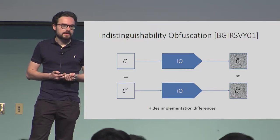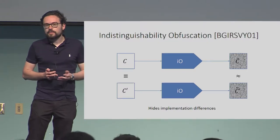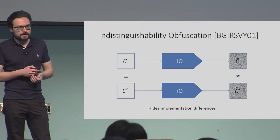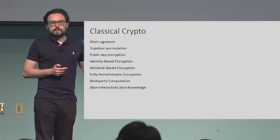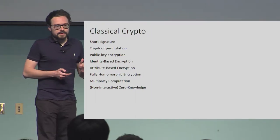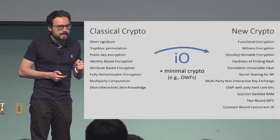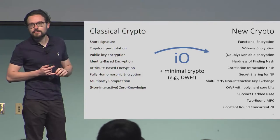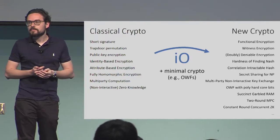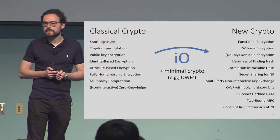Intuitively, this means that implementation differences in these circuits are hidden. As we know, this notion is extremely useful and has tremendous applications in cryptography. While we can already do many cool things without IO, if you are allowed to use IO and just some additional minimal things, this opens a whole new world of amazing things, many of which we don't know how to do without IO. So whether and under which assumptions IO exists is an extremely important question.